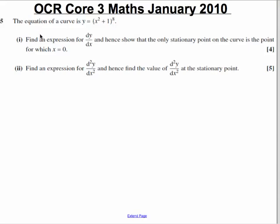Okay, it tells us we've got an equation of a curve that is y equals x squared plus 1, all of that to the power of 8. It asks us to find an expression for dy by dx and hence show that the only stationary point on the curve is the point for which x is equal to 0.